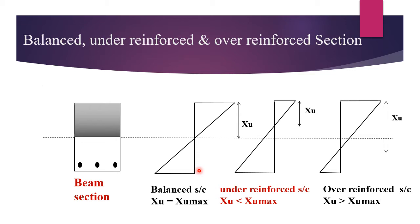Therefore both the materials fail simultaneously and the balanced section is economical. In the balanced section, the actual neutral axis is equal to the critical neutral axis, that is Xu equals Xu max.